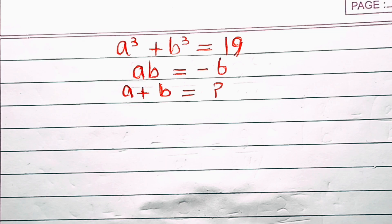Hello everyone. We have a³ + b³ equal to 19, ab equal to minus 6, and we need to find the value of a plus b.